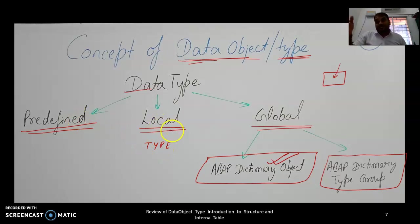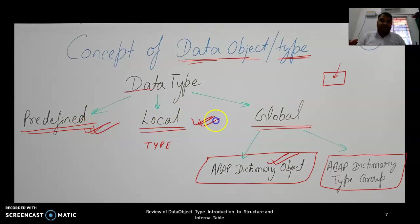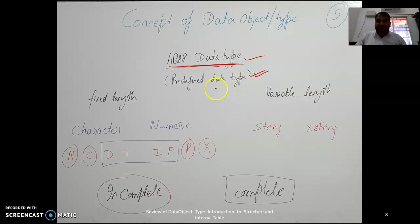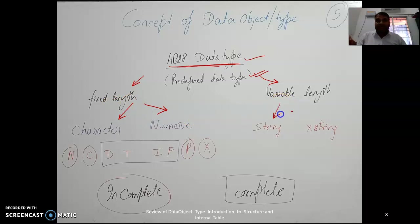Local data types are created using predefined data types. If you want to share a data type with your team or project group, you define it in the ABAP dictionary object. ABAP predefined data types fall into two categories: fixed length and variable length. In fixed length, you have character types and numeric types. In variable length, you have string types.